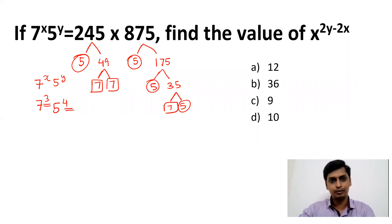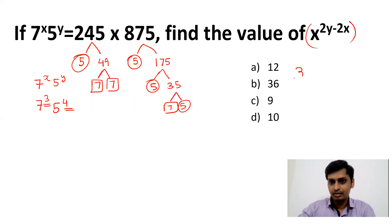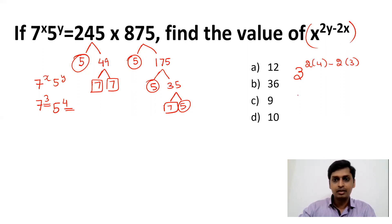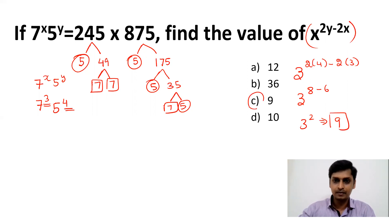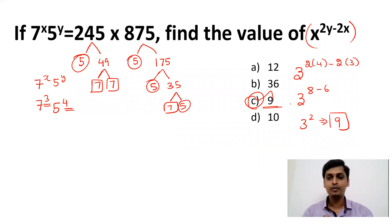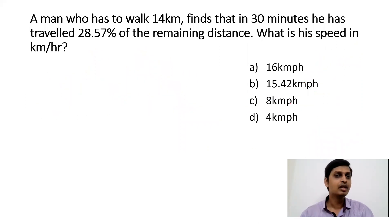So 7^x × 5^y = 7^3 × 5^4, meaning x = 3 and y = 4. Now substituting into x^(2y) − 2x: that is 3^(2×4) − 2×3 = 3^8 − 6... wait, solving it as 3^(2) = 9. The answer for this question is 9.